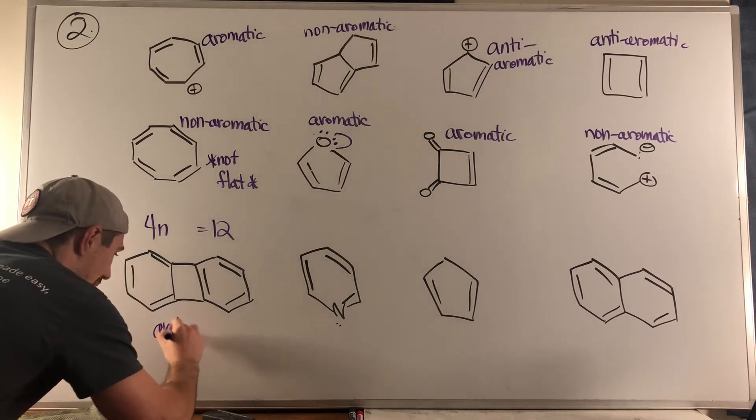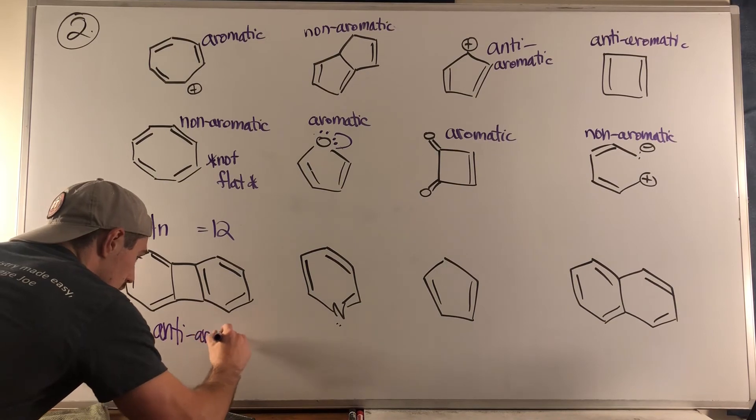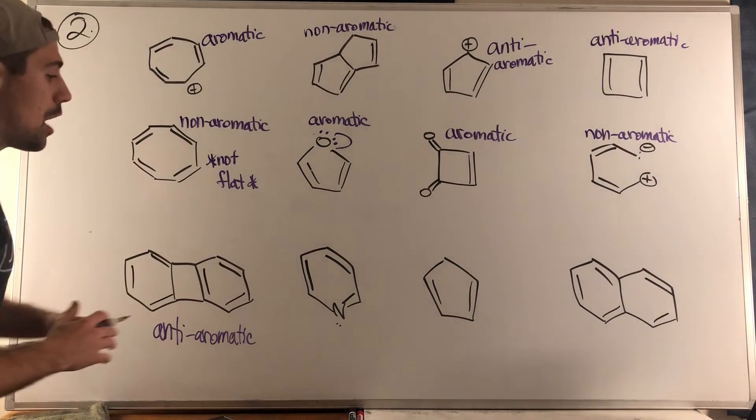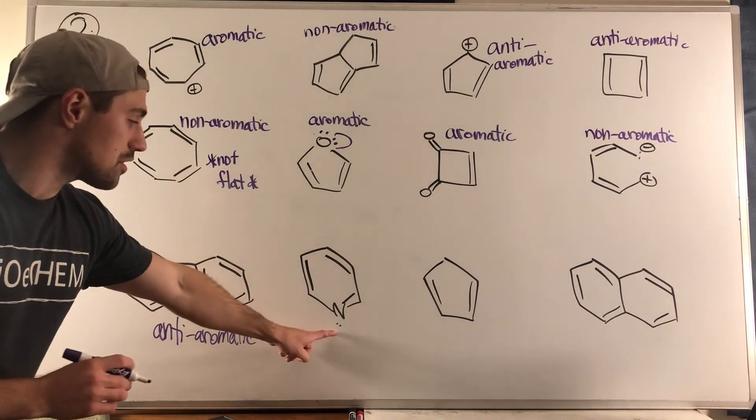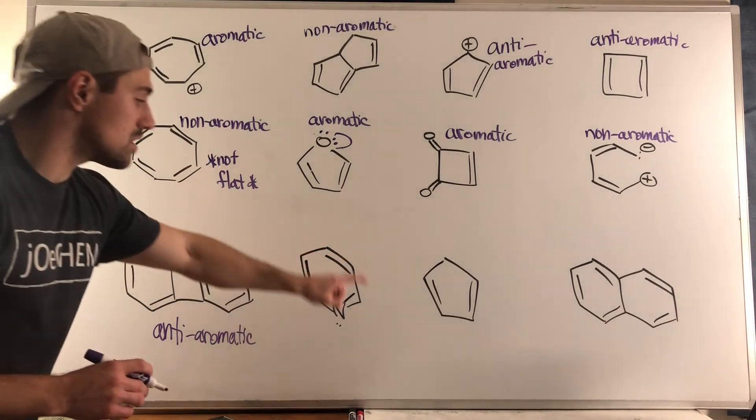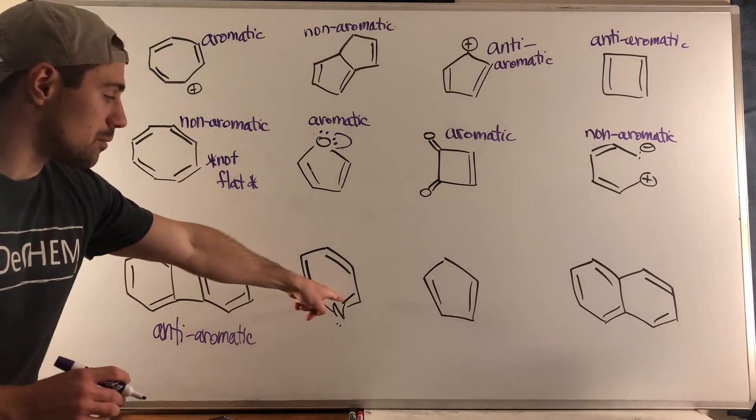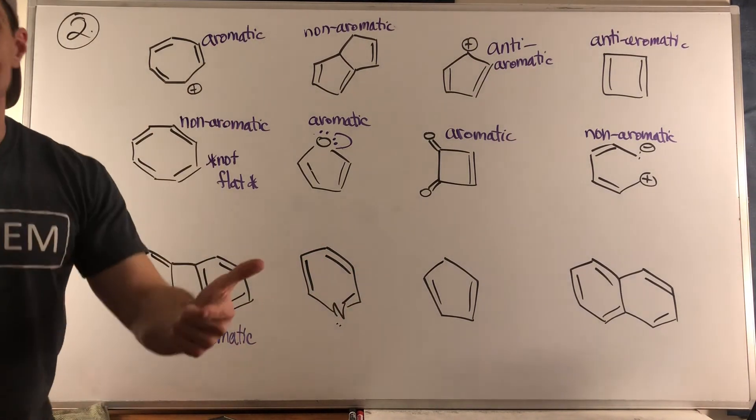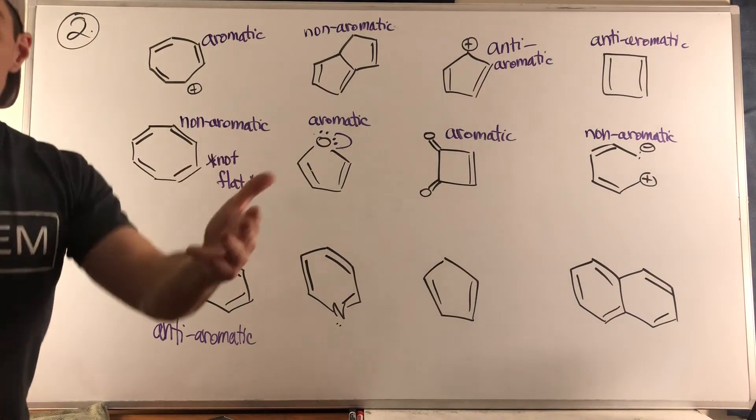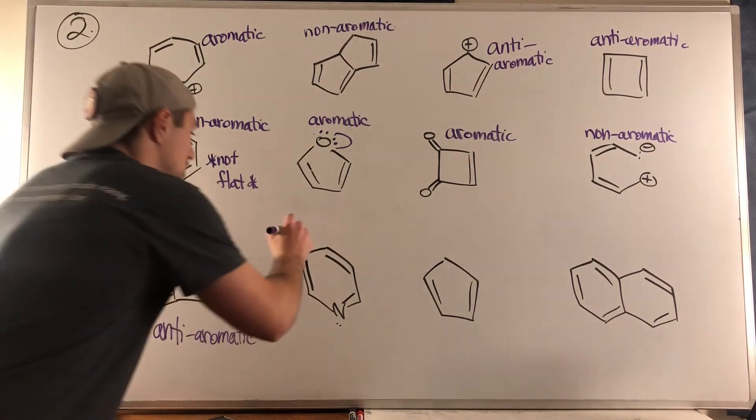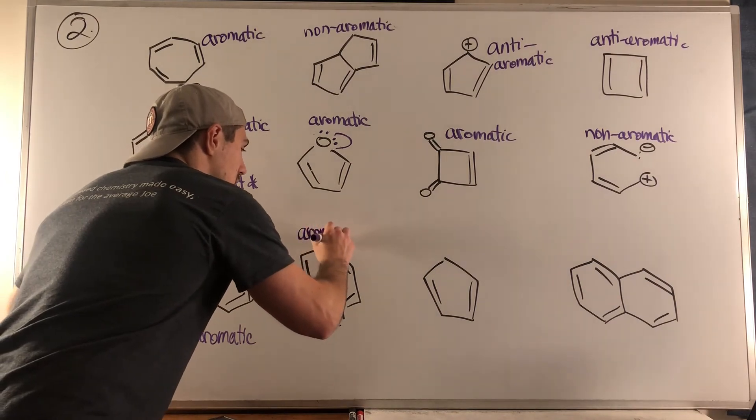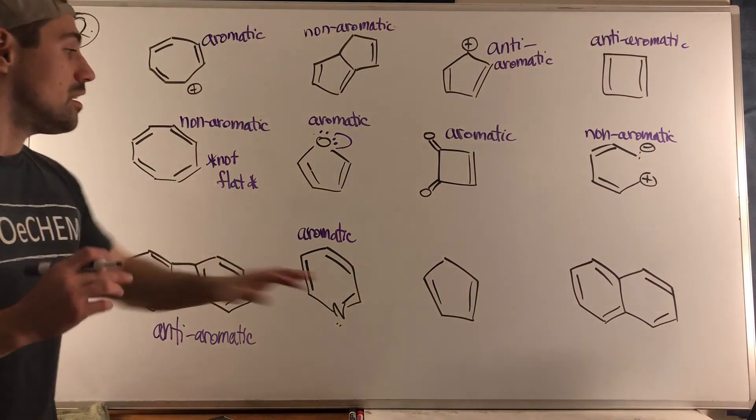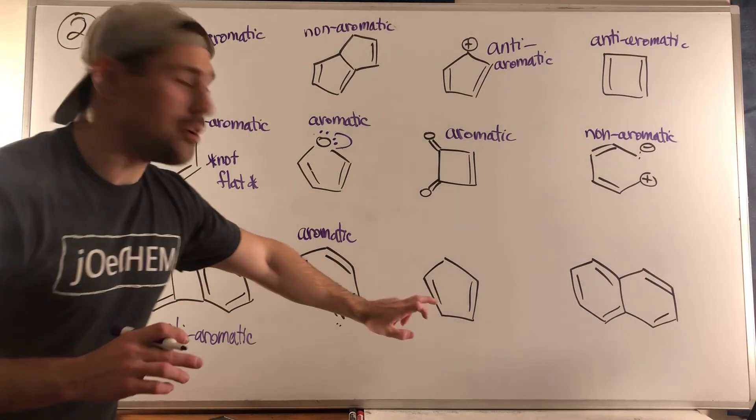Over here this is our lovely friend pyridine. You don't need to count this lone pair. You can see 2, 4, 6, sp2 because of that double bond, sp2, sp2, sp2, sp2, sp2. We're ring, we're conjugated, flat, six pi electrons from the double bonds. This is in fact aromatic and you will be using pyridine later on.